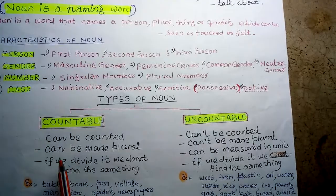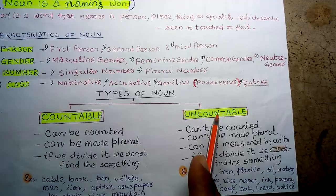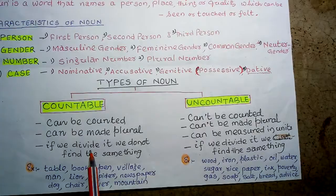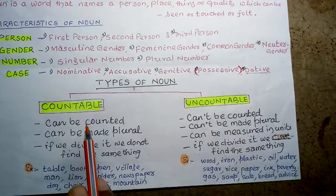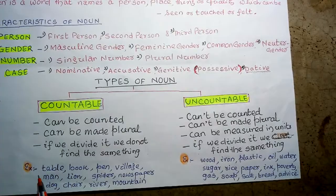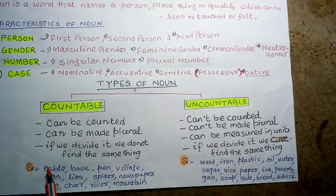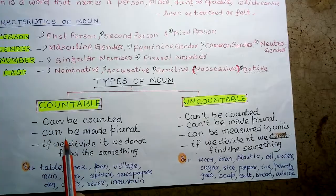Types of noun: noun is of two types — countable and uncountable. Countable nouns can be counted, can be made plural, and if we divide them, we do not get the same thing. For example, a table — you can count: one, two, three, four, five tables.